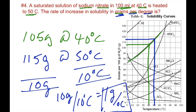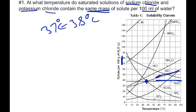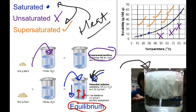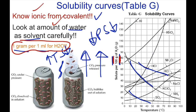Hard work plus sacrifice equals success. Remember: know if the compound is ionic or covalent. Look at the amount of water in the question — Table G uses 100 mLs or 100 grams, but they can give you any multiple. Know the one-to-one ratio of grams to mLs for water. Know how gases behave with pressure and temperature. Know your definitions of saturated, unsaturated, and supersaturated. I hope you got something out of this video — take care.